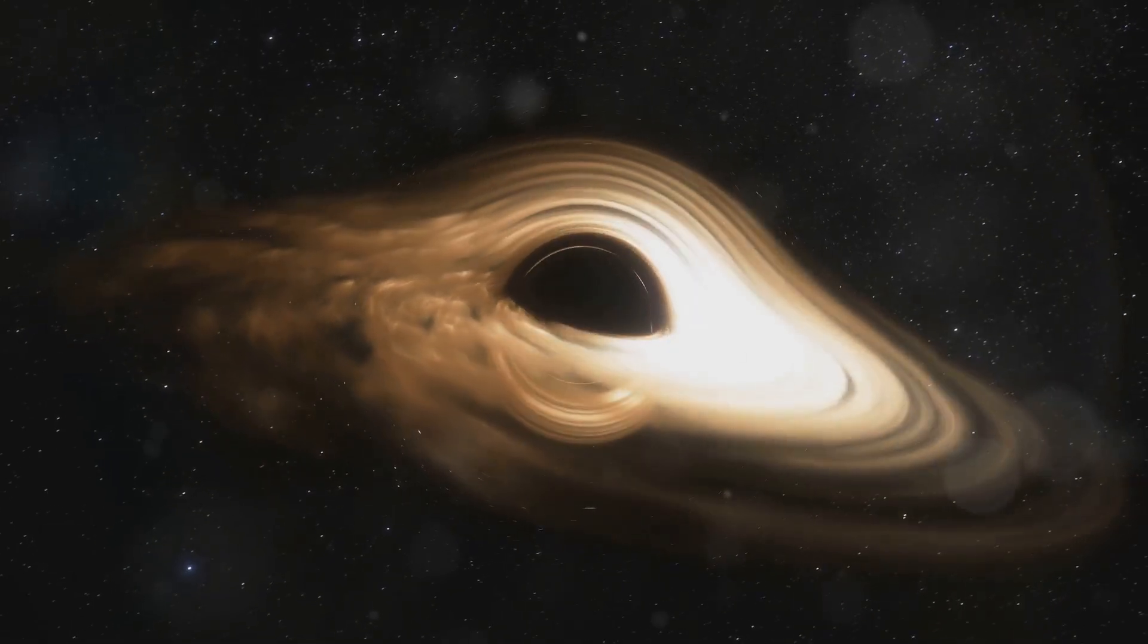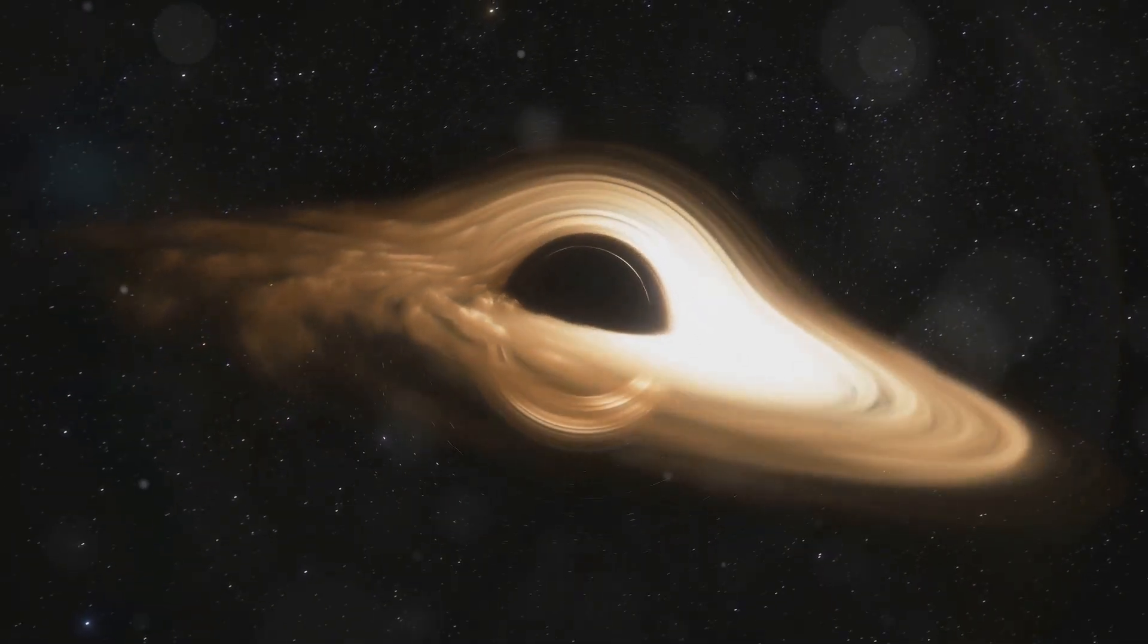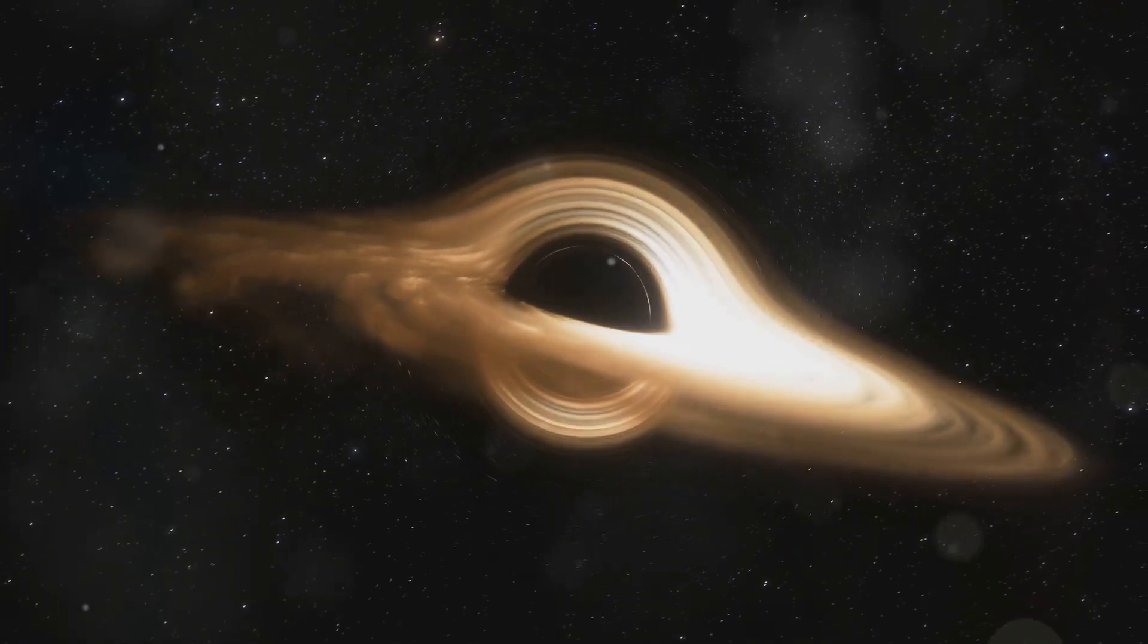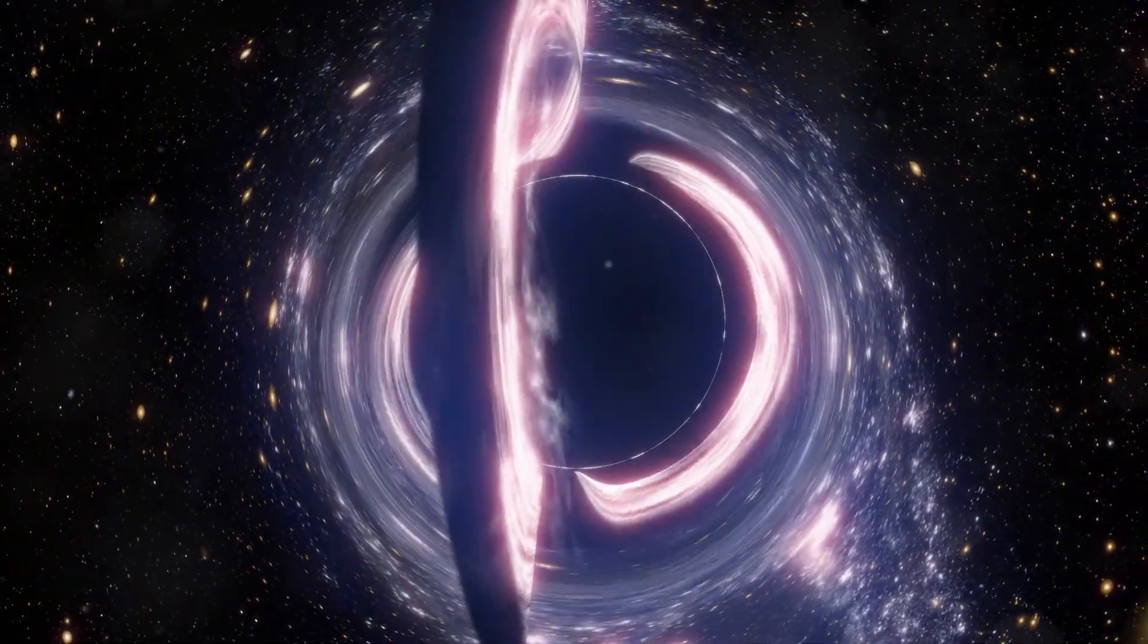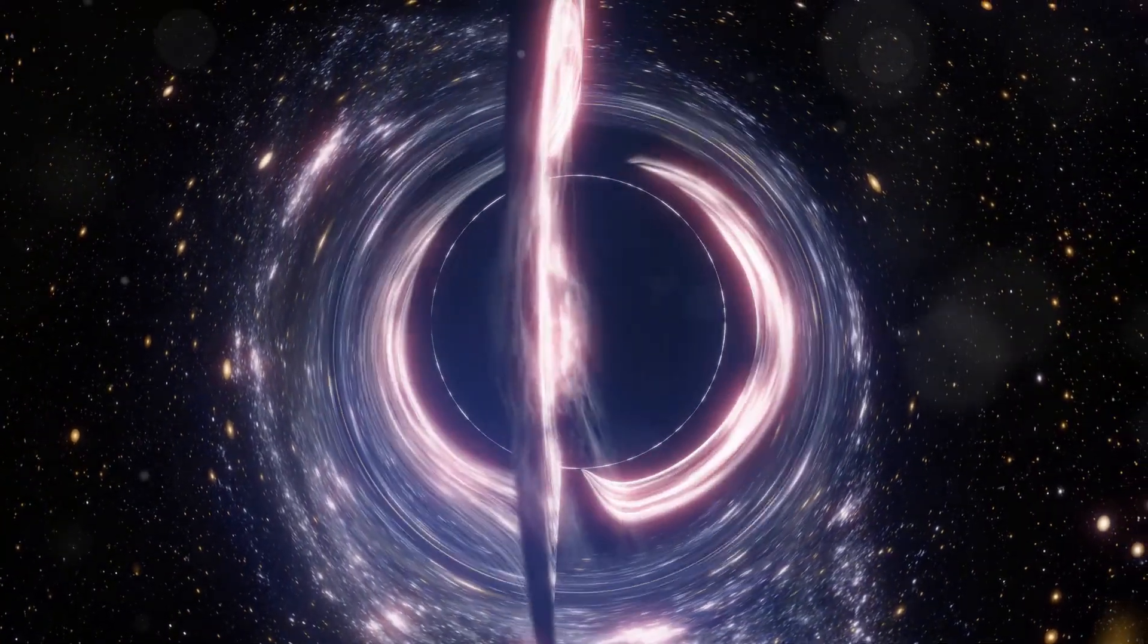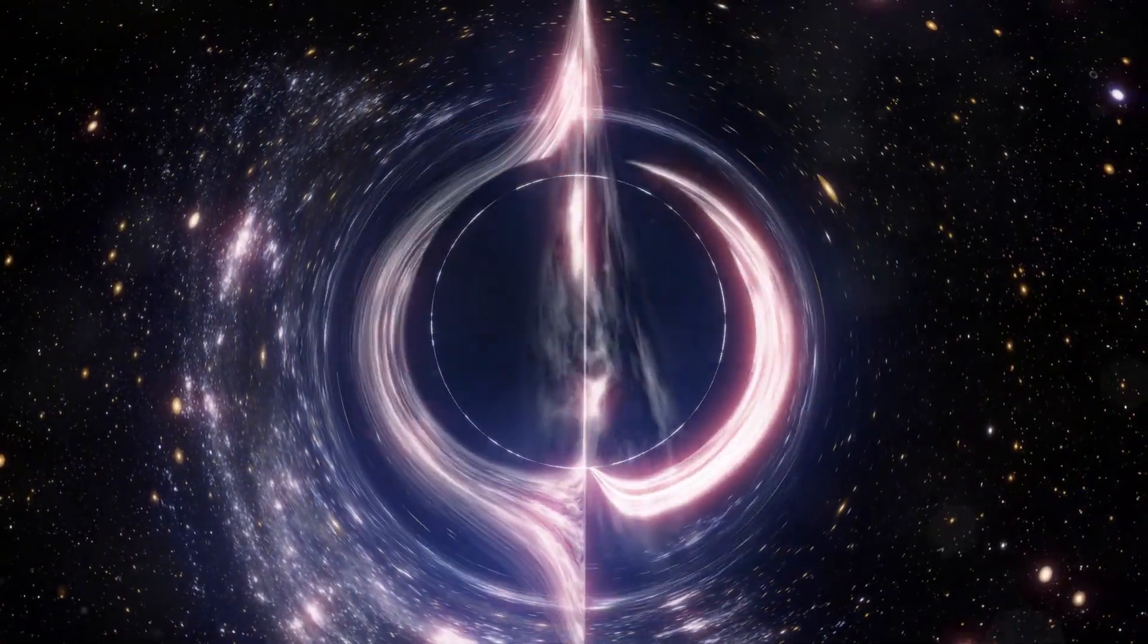As matter falls into a black hole, it heats up to millions of degrees and emits intense radiation, including gamma rays. This radiation is a byproduct of the extreme conditions near the black hole.